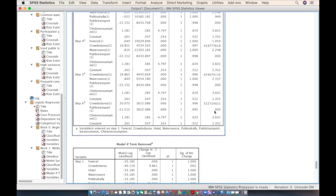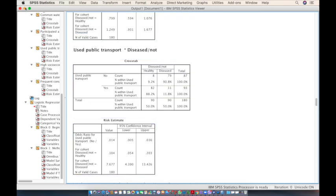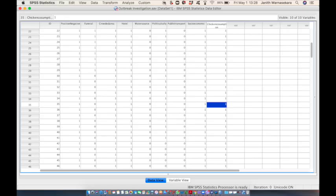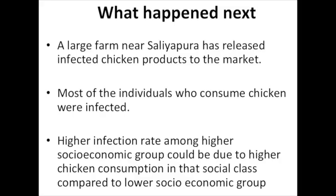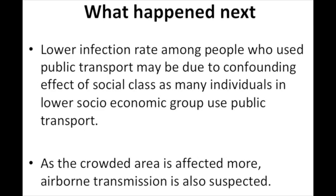Although a more detailed model could be developed, our main focus is controlling the outbreak, so we pursue the main risk factor: chicken consumption. Epidemiologists found that a large farm near Saliapura village had released infected chicken products to the market. Most individuals who consumed chicken became infected. The higher infection rate among the high socio-economic group was likely due to greater chicken consumption in that social class.